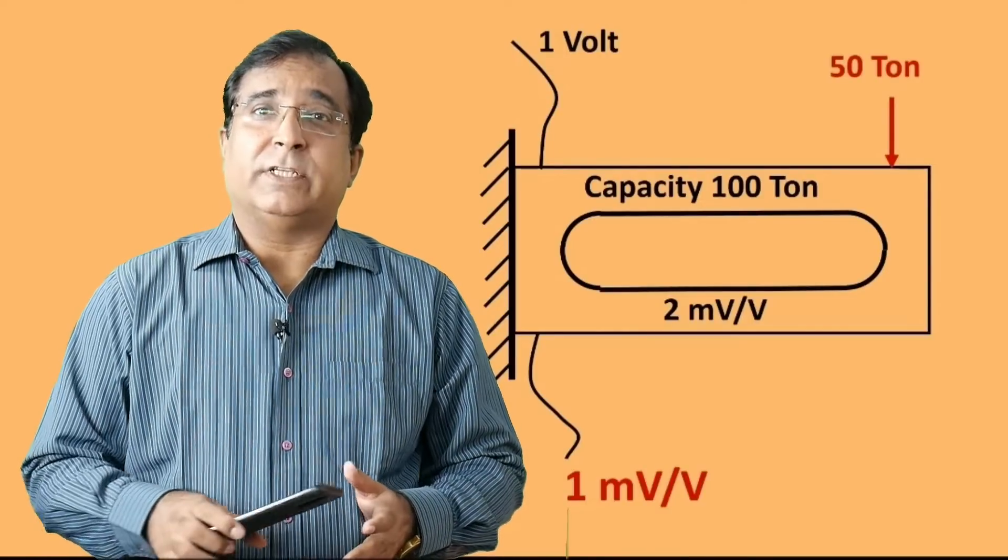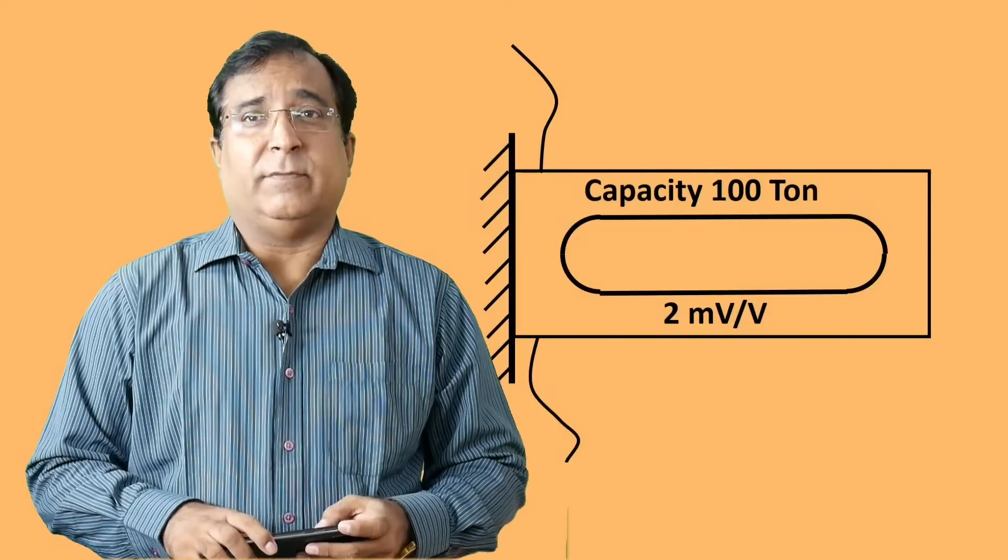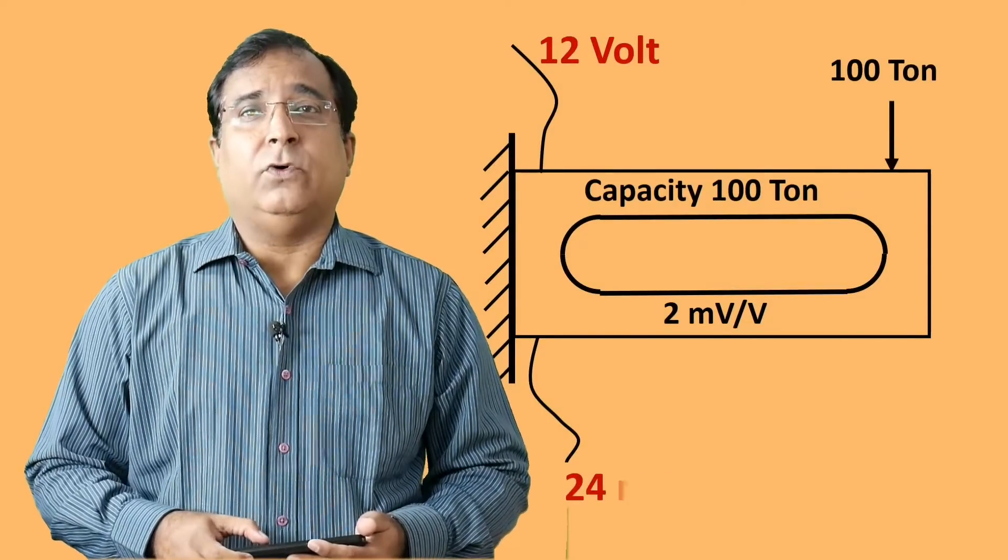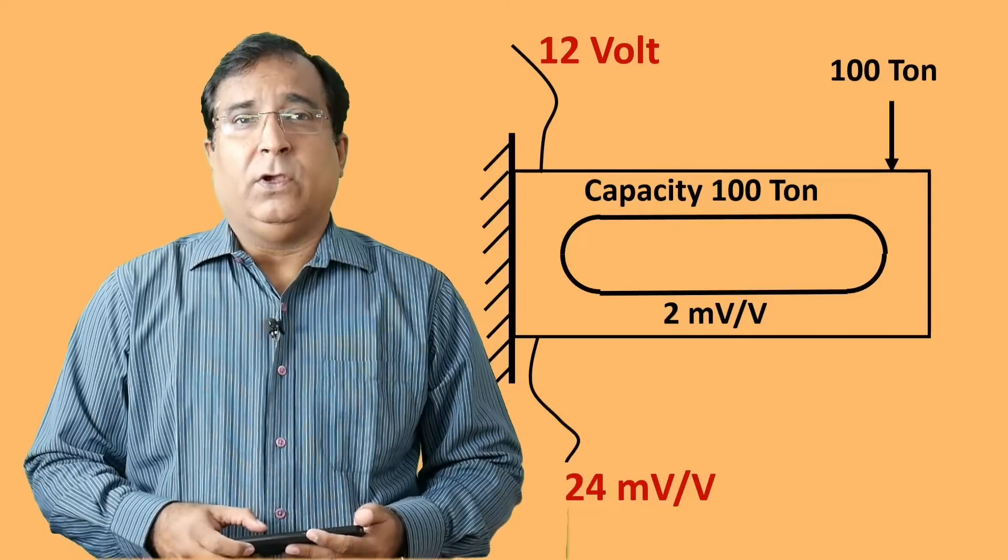But here the excitation voltage is mostly given at 12 volt instead of 1 volt. Now my output at 100 ton will increase to 24 millivolt. So it will be good for measuring circuit to measure this higher output and makes measurement easy.